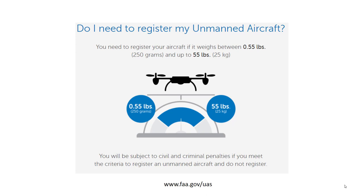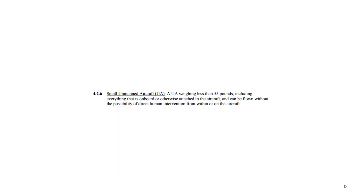Back in 2012, the FAA Reauthorization Act of 2012 — Congress came up and gave the FAA some guidelines on weights and things to do. The FAA eventually came up with what they call Part 107 Small Unmanned Aircraft Systems regulations. Out of Part 107 is where we came up with the remote pilot certificates, which allows you to fly commercially in the National Airspace System.